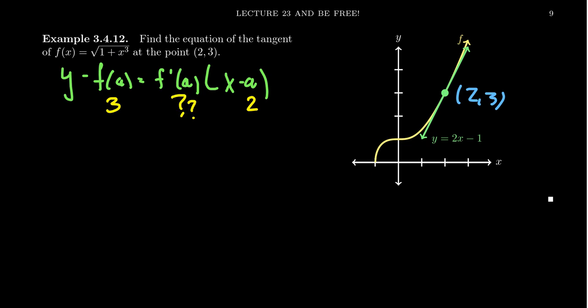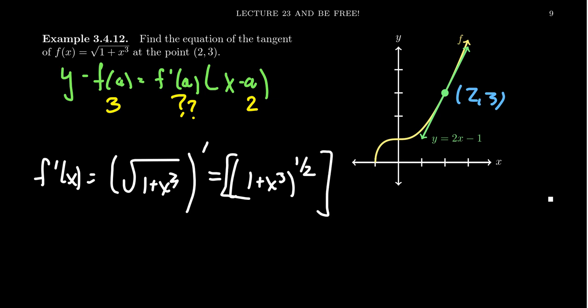The derivative, we don't yet know what that is, so we need to compute that. To find f'(x), we're going to take the derivative of the square root of 1 plus x cubed. When it comes to square roots, we're better off thinking of them as a power function. So I'm going to write this as (1 plus x cubed) raised to the 1/2 power. And then we need to take the derivative of this thing.